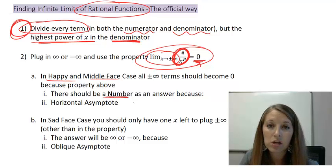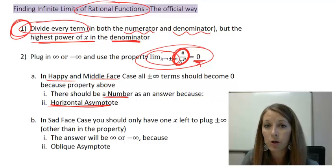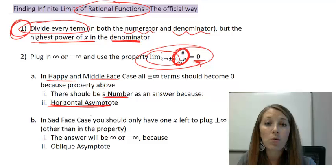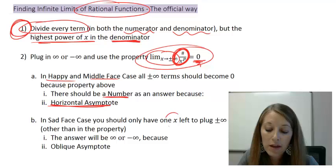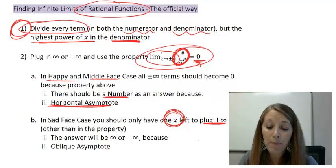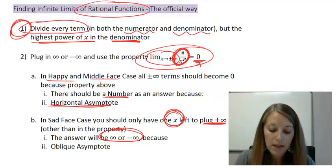That's going to leave us with a number as an answer. We know there's going to be a number as an answer because in happy and middle face we have a horizontal asymptote. In sad face case, I kind of left you hanging because we said there's a way to do it without long dividing — this is the official way. You should only have one variable left. You can plug in positive and negative infinity into it, and your answer is either going to be positive or negative infinity because it follows that oblique asymptote.